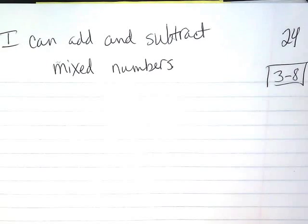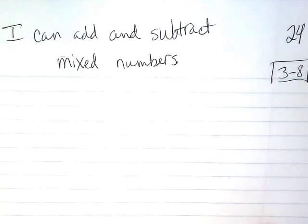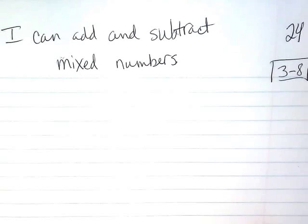Okay, so we're starting 3-8 today. On page 4 of our spiral, I need you to take your notes. We'll start off with the objective: I can add and subtract mixed numbers.